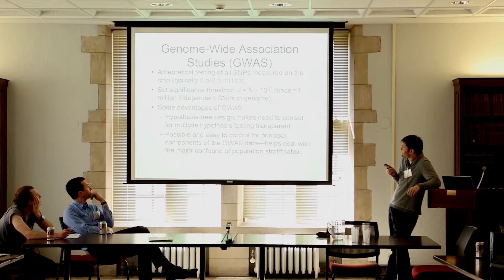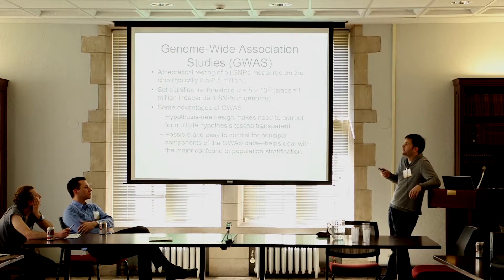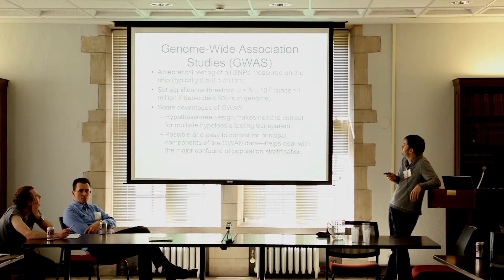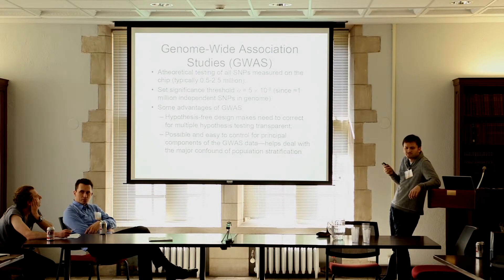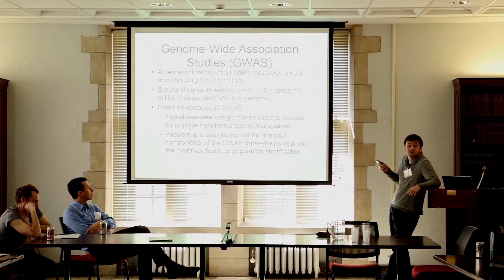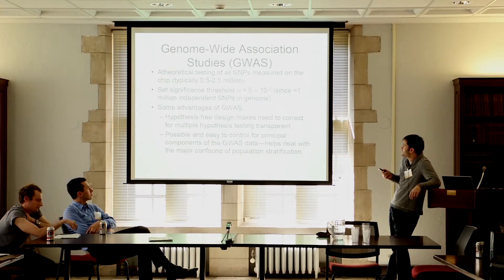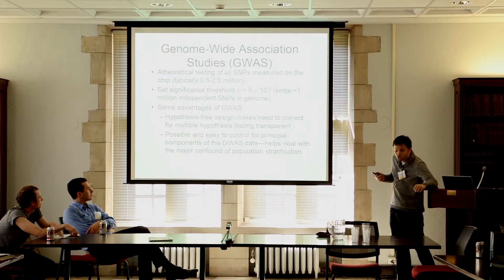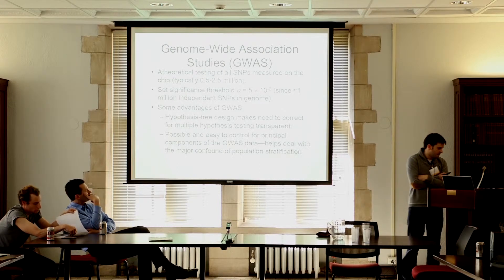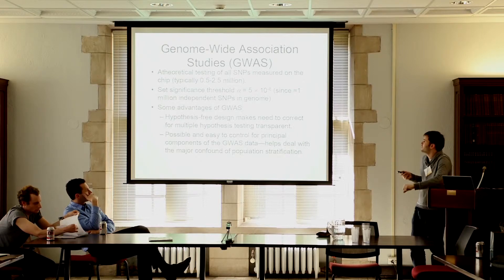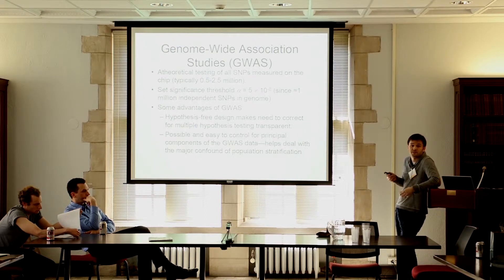The example I'll give is the challenge of population stratification. In a GWAS study, you atheoretically test a very large number of markers — these days usually 2 million or so. Because of the large number of statistical hypotheses tested, a very stringent significance threshold is required. GWAS also has some non-obvious advantages, one being that the hypothesis-free design makes the need to correct for multiple hypothesis testing more transparent.